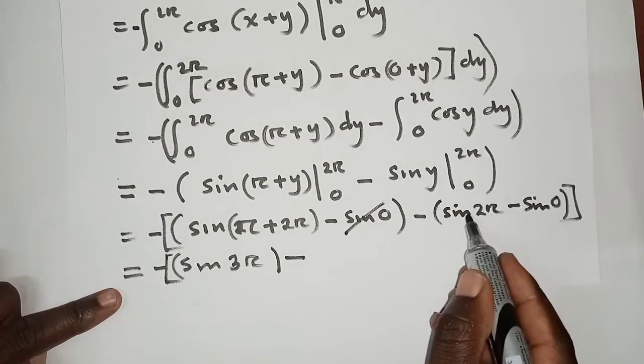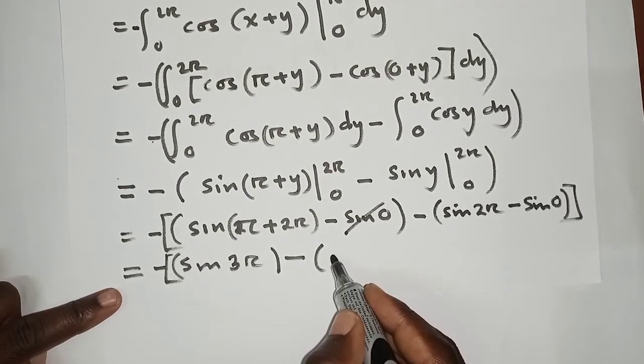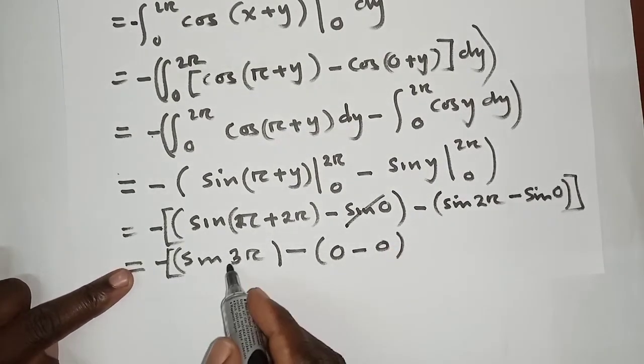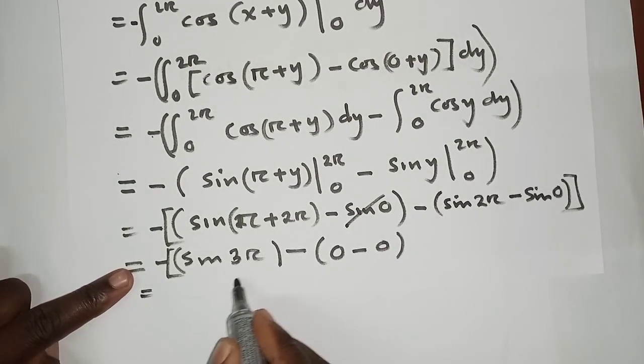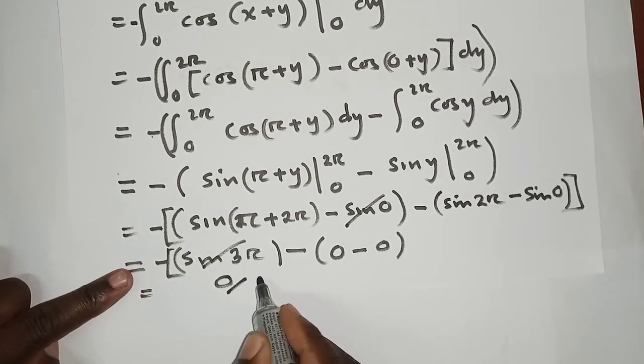We come to this one - it's negative. Sine 2pi will just be zero, sine zero will just be zero, even here it will be zero, and our answer will be zero.